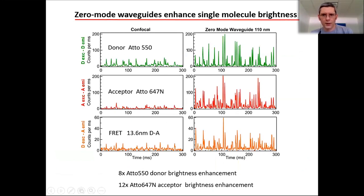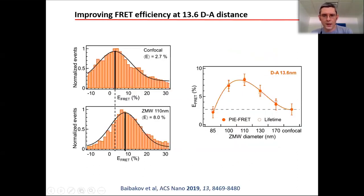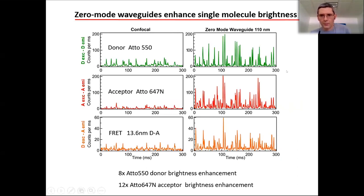We do these recordings with a confocal microscope as reference on a glass coverslip, monitoring the donor, acceptor, and FRET. Every burst is a single molecule passing through. In the nano hole, we see brighter bursts in all channels — typically 8 times brighter for the donor and 12 times for the acceptor, due to the plasmonic enhancement. Based on this, we analyze all bursts and compute the histogram of FRET efficiency.